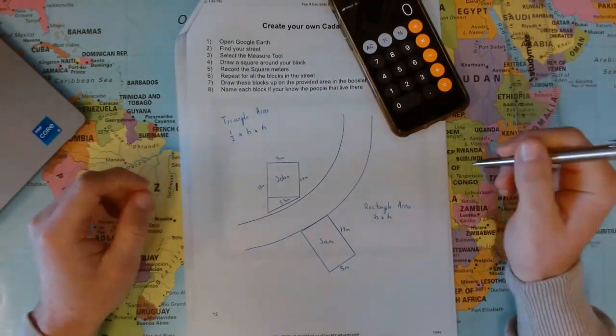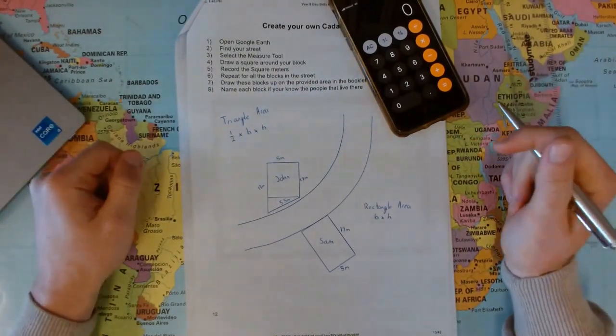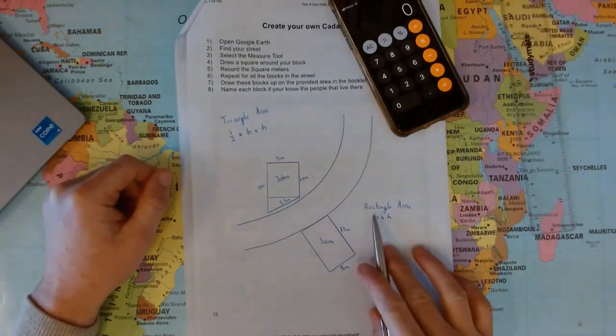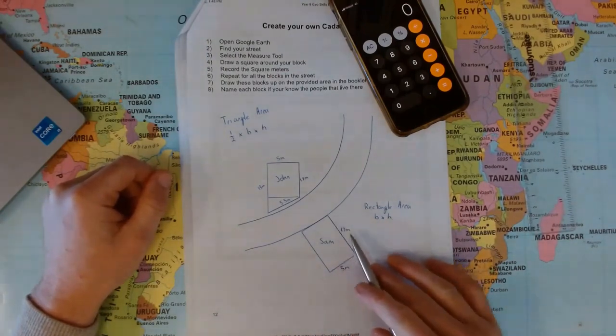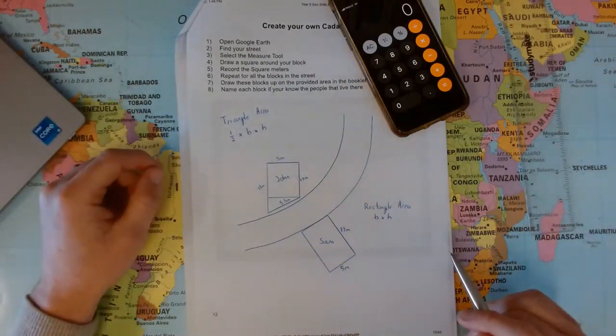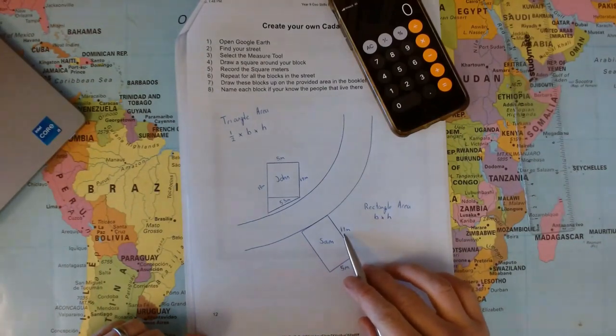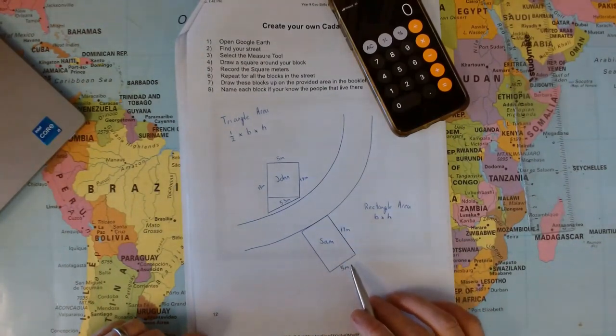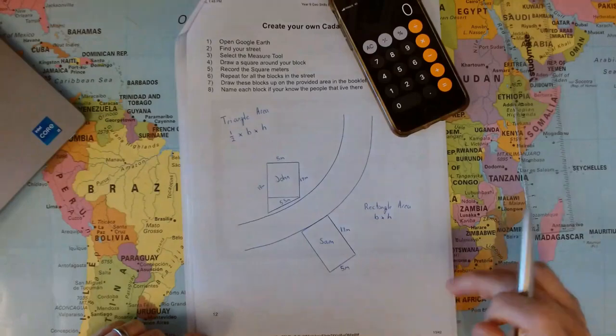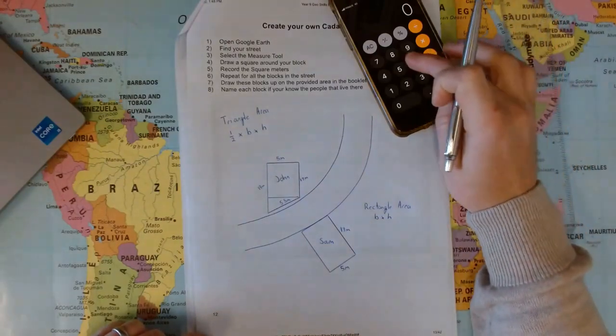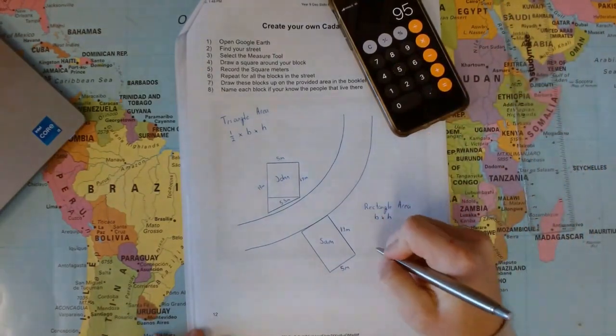What is the area of Sam's block? Because that determines things like how much he pays in rates or how much he can sell his property for. To calculate the area of a rectangle, it is just the base times the height, or the length times the height, the long side times the short side. The height or the length that I have here is 19 meters, and then down here at the base I have 5 meters. So all I need to do is times those two together to get my square meters. 95. So the answer would be Sam's block is 95 meters squared.